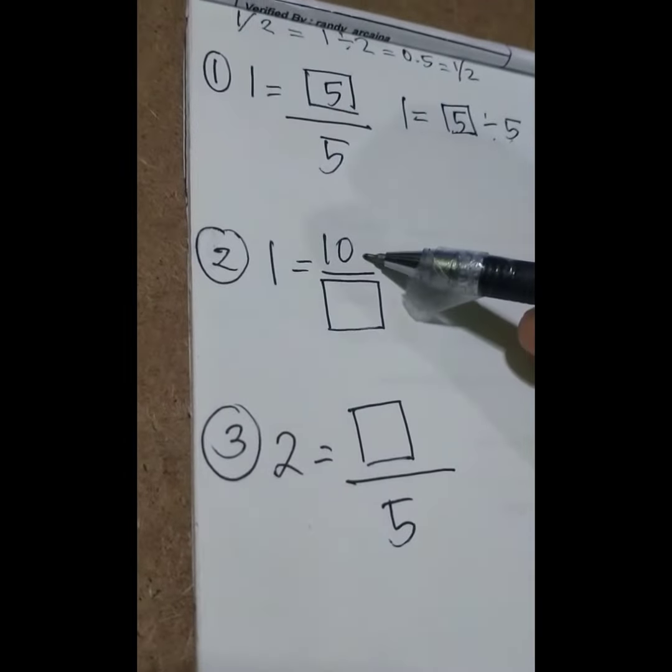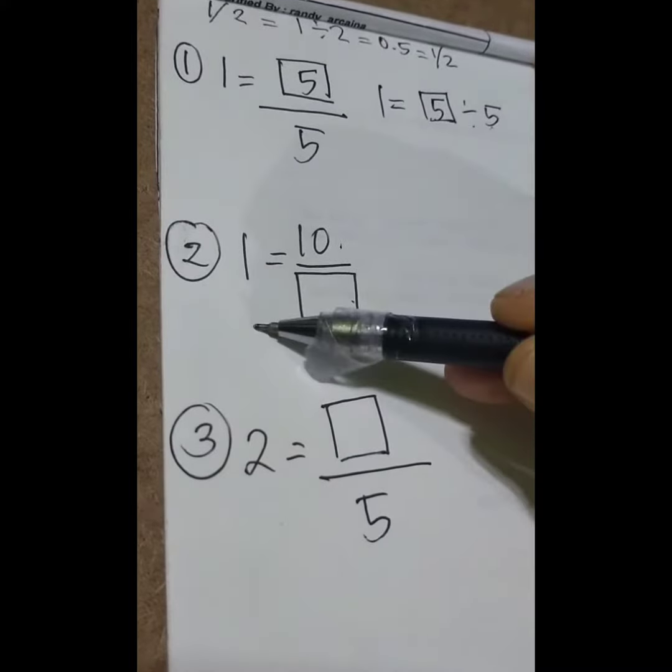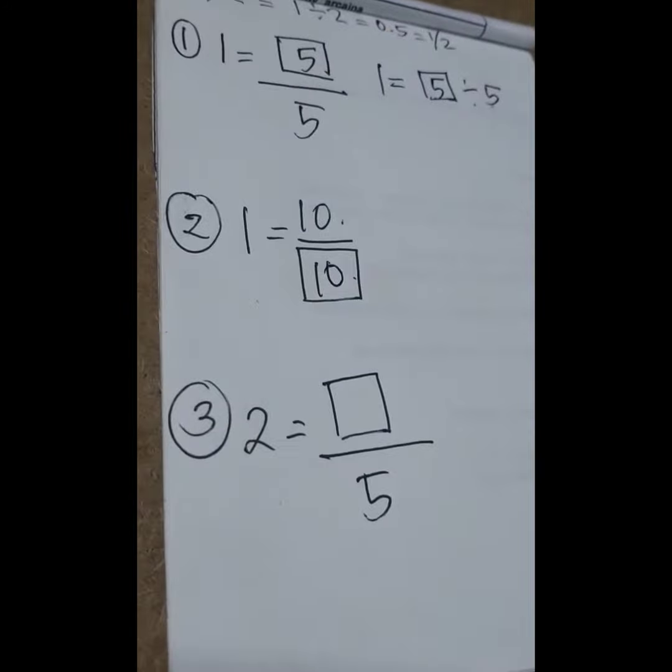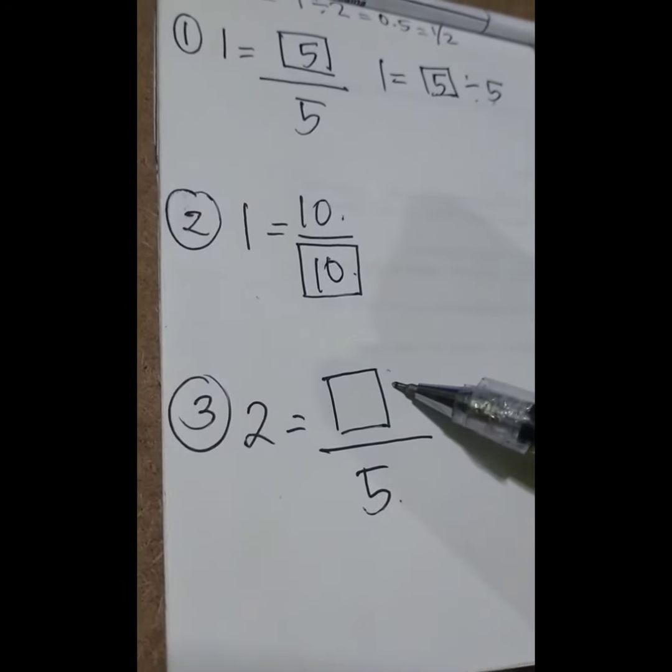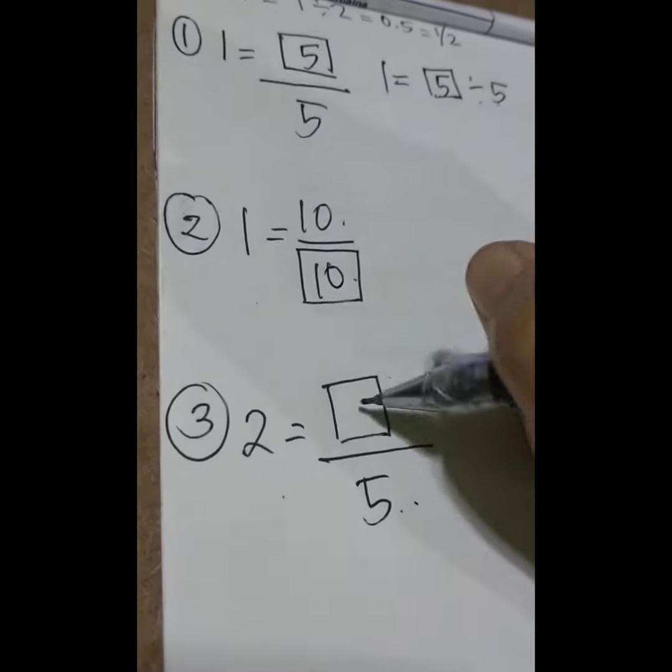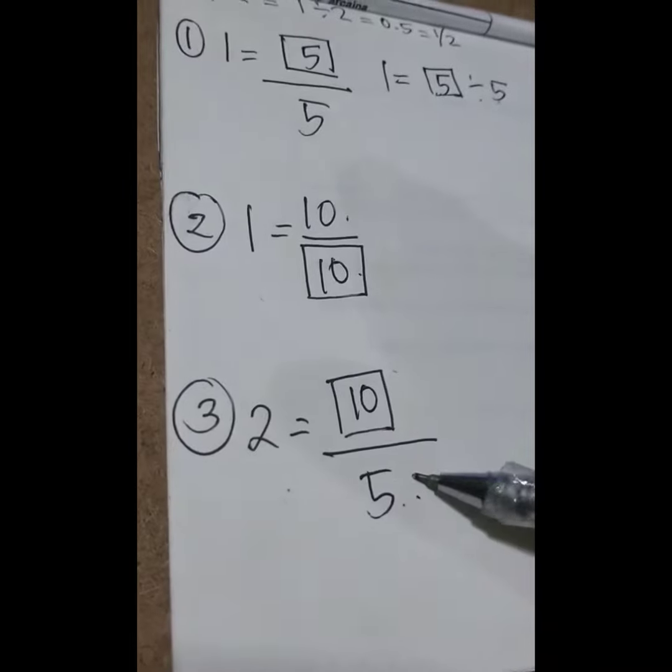Ganon din dito. Ten divided by what number ang answer one? Di ten din. Ten divided by ten, one. Dito sa kabila, anong number ang pag-divide mo ng five? Two, diba? Ten. Ten divided by five, two. Two times five, ten.